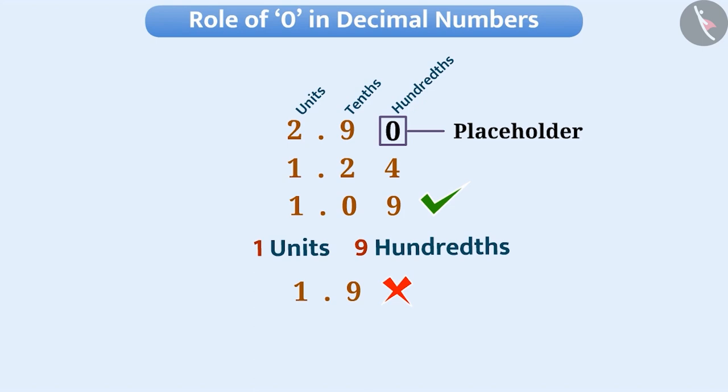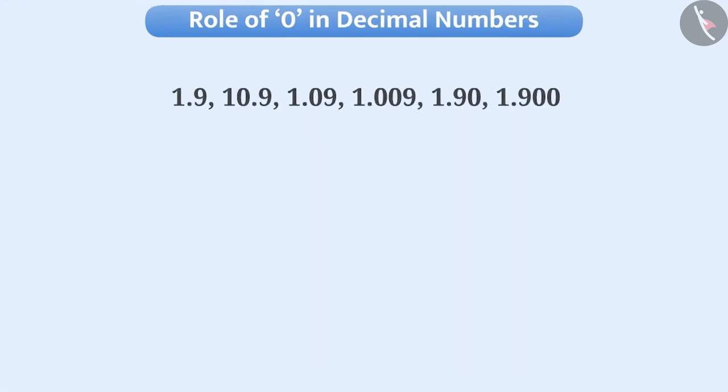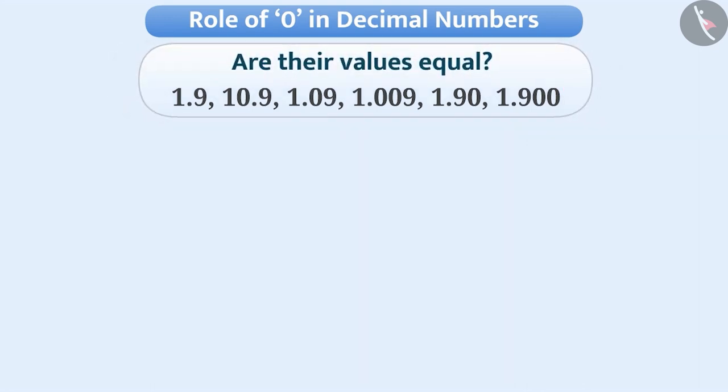In order to know the importance of zero as a placeholder in decimal numbers, let's look at an example. Here are some numbers. Are their values equal? Pause the video and think about it.